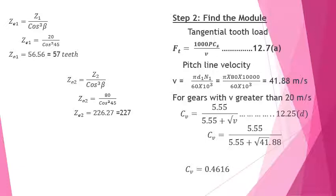Next step is to find the module. The tangential load FT is given by equation 12.7a: FT = 1000 × P × CS / V. Pitch line velocity, since the pinion is the weaker member: V = pi × D1 × N1 / (60 × 10³) = 41.88 m/s. Since velocity > 20 m/s, CV = 5.55 / (5.55 + √V). Substituting V = 41.88 gives CV = 0.4617.